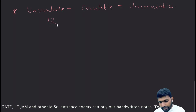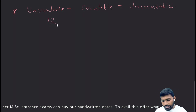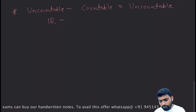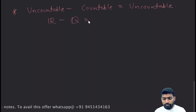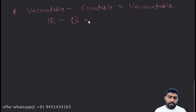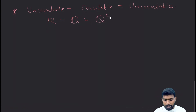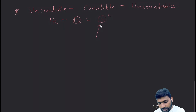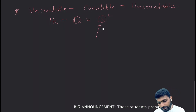For example, if we take the set of real numbers and subtract the set of rational numbers, we get the set of irrational numbers — and that means the set of irrational numbers is an uncountable set. This confirms the result.